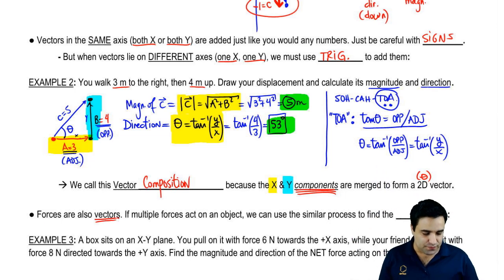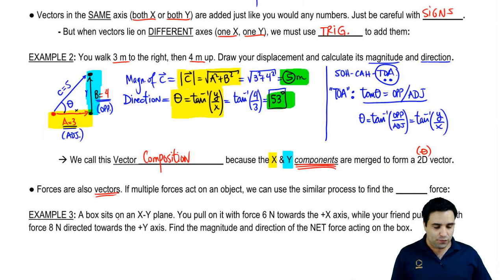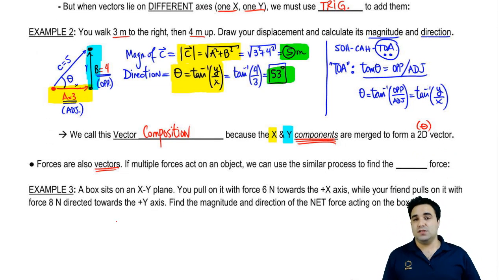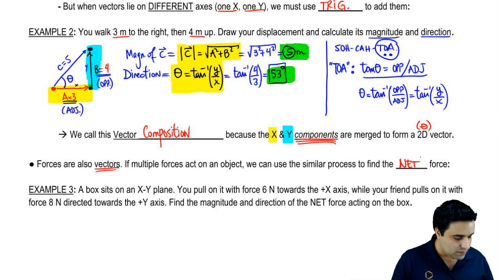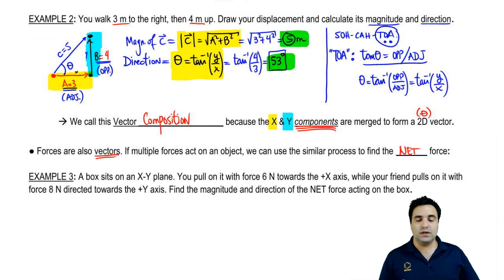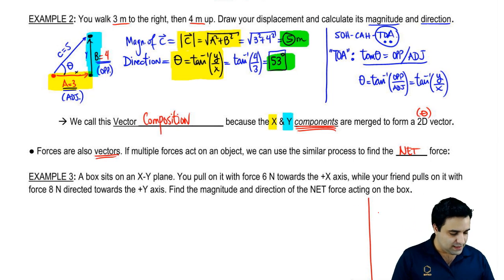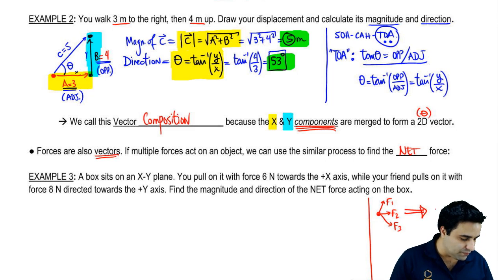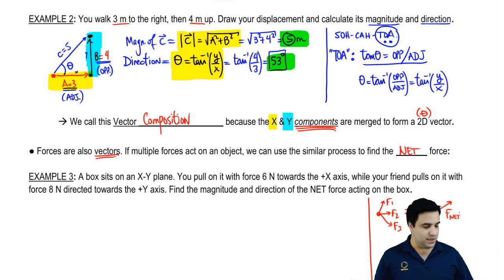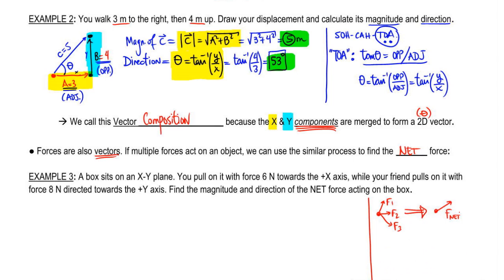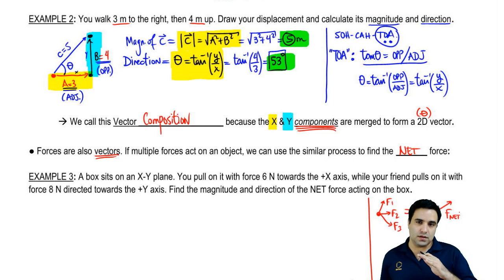So one last point, forces are also vectors. Forces also have direction. So if you have multiple forces acting on an object, we can use the same process we just talked about to find what's called the net force. And what is the net force? The net force is an equivalent force. Let's say you have an object that's being pulled by three forces, F1, F2, F3. The net force is one force that could take the place of all of those. And I could say that that one force produces the same effect. That one force produces the same effect as all of the other forces combined. That's what that is. Net force. We're going to do some of that stuff later. So we can use the addition of vectors just like I've shown you to figure out the net force.